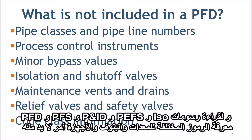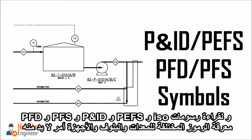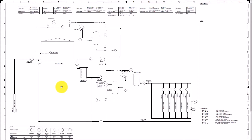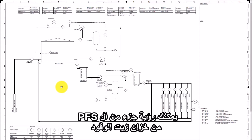To read PFD, PFS, P&ID, PEFS, ISO, and GA drawings, knowing the various symbols for equipment, valves, and instruments is a must. Now let's look at this PFS or PFD — both are the same. You can see the PFS of the OSBL part of the plant fuel oil and slop tank.